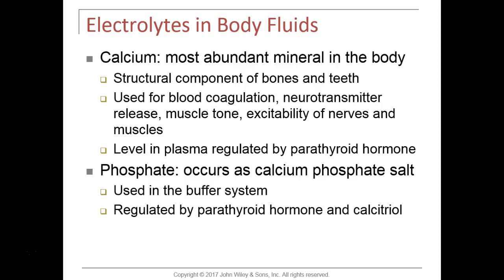Calcium in plasma is regulated by parathyroid hormone (PTH). PTH does three main things: it makes bone release calcium into the blood, it makes the kidneys reabsorb more calcium, and it makes the kidneys produce calcitriol — the most active form of vitamin D. Calcitriol targets intestinal cells to absorb calcium from our diet. All of PTH's effects work to increase blood calcium levels.